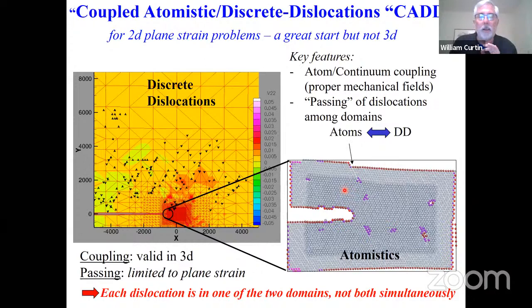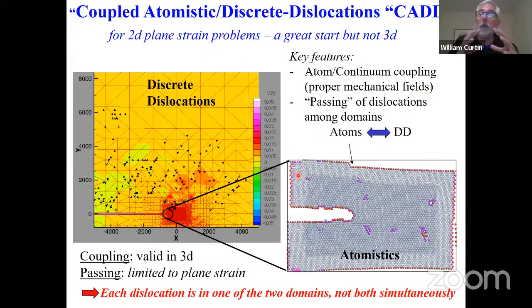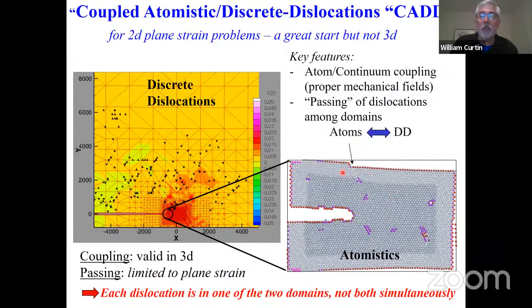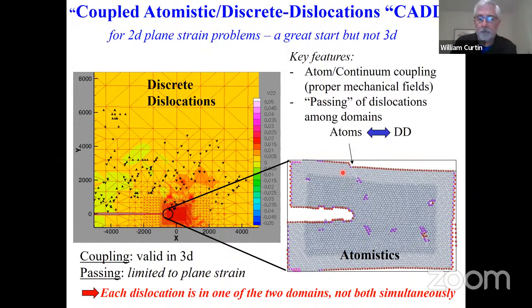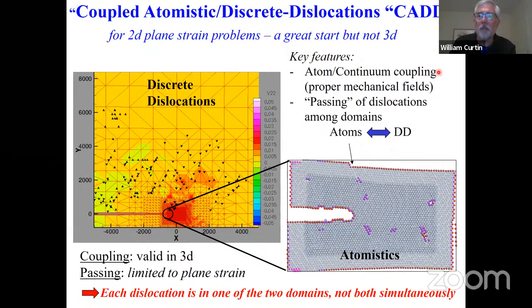In 2D, the dislocations are line defects perfectly aligned, so a dislocation moving through the interface from inside to outside is relatively easy—it's either a line inside or a line outside, never crossing both simultaneously. That part limits us to plane strain. The coupling between a continuum domain and an atomistic domain using a pad of atoms is generic to 2D and 3D, so I can do 2D and 3D coupling without enabling plasticity to go back and forth. But enabling plasticity to cross is much more difficult. We achieved that in 2D plane strain but not in 3D. When I moved to EPFL, we decided to take on the challenging part of 3D.